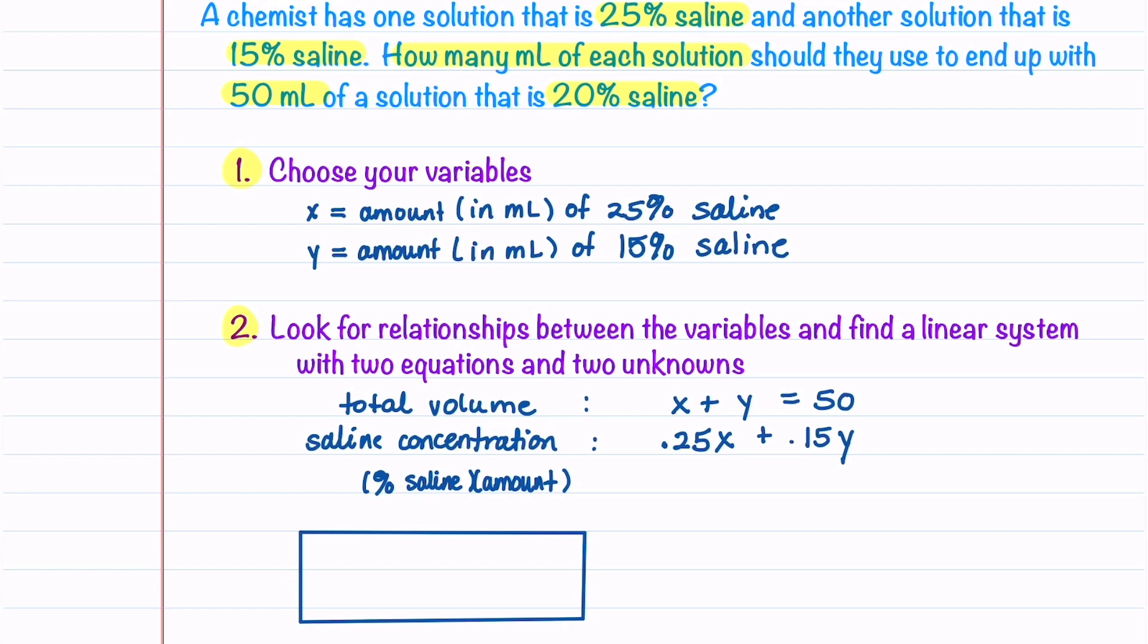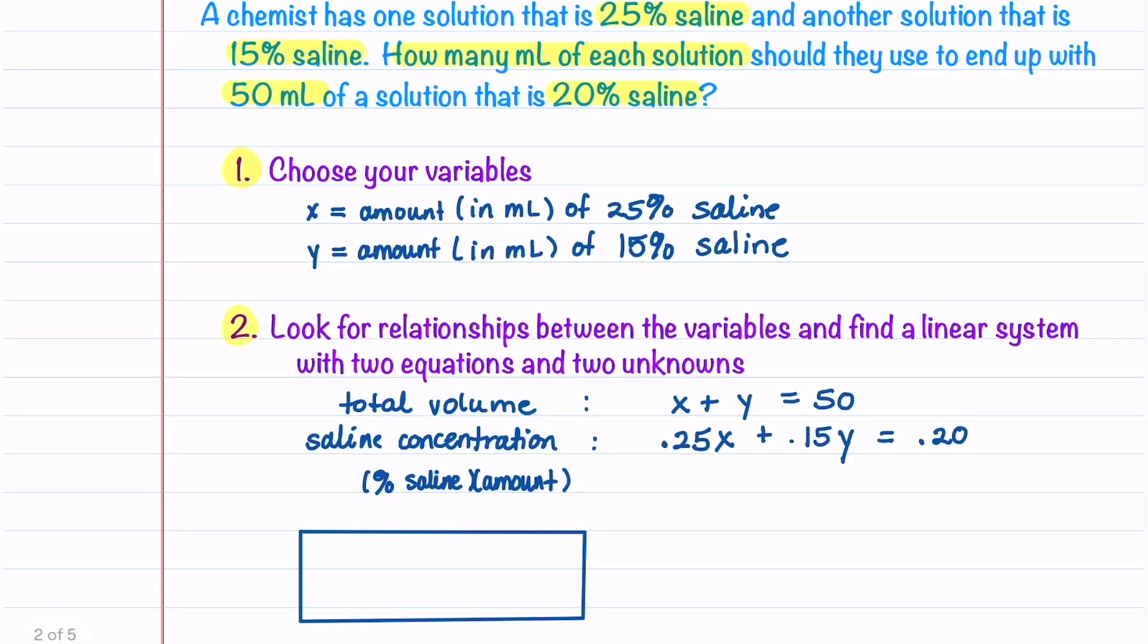That's going to equal our final amount, which is 20% saline, or 0.20, times 50 milliliters. The right hand side equals 10. Now let's simplify this equation by multiplying both sides by 100. This gives us 25x plus 15y equals 1000.